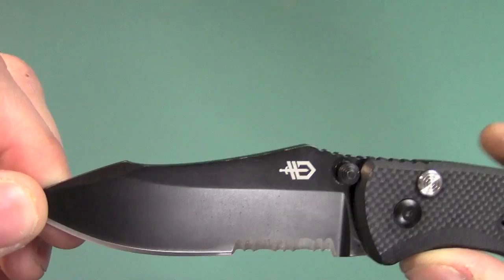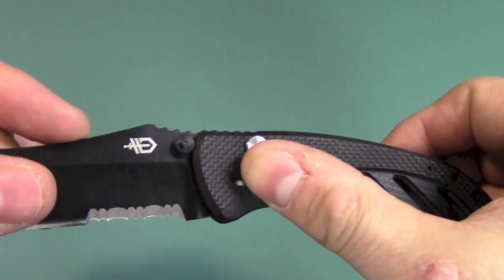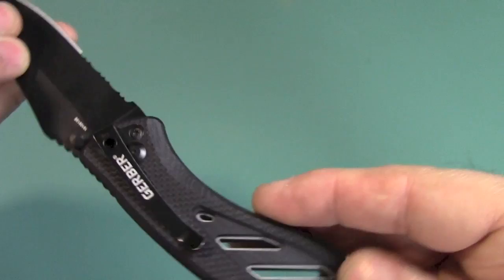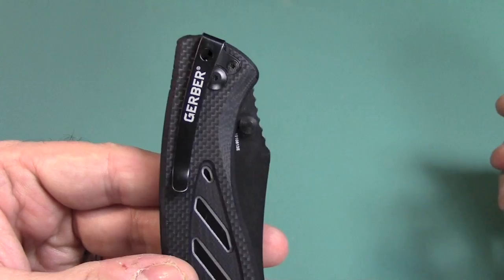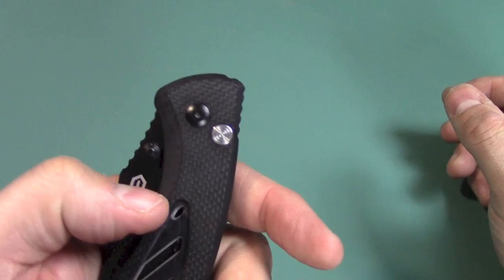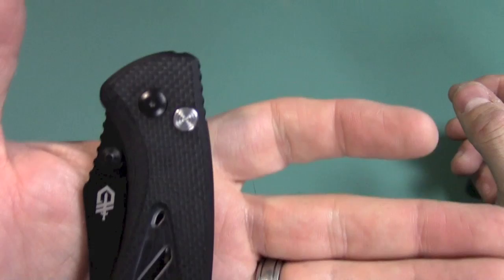The handle thickness is about a half an inch, and again, nice G10. Has minimal traction, nothing aggressive really at all. And you can see also you have a clip, which is deep carry. I'm going to go ahead and fold this up. So when you put it in your pocket, it's all the way down there. It is a small clip, but I carried it a couple days, and it was just fine. It's actually very stiff. It was a little bit hard to get in and out of the pocket. Now this can be mounted on... I don't see where it can be mounted anywhere else. So this is only right-handed tip down, as far as that clip is concerned.